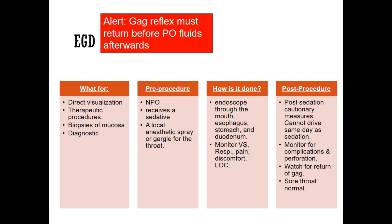Pre-procedure: NPO to prevent aspiration — NPO after midnight or at least four hours. The patient will receive a sedative. A local anesthetic spray or gargle can be used for the throat, which numbs the gag reflex altogether. The spray used in the hospital is called hurricane spray — so watch for the gag reflex carefully afterwards if that spray was used.